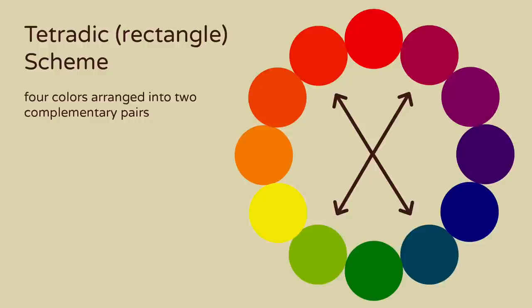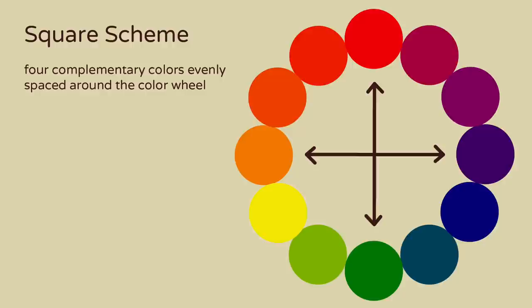A split complementary color scheme is made up of a base color and the two colors adjacent to its complementary color. A tetradic color scheme is made up of four colors arranged into two complementary pairs. And a square color scheme is made up of four complementary colors evenly spaced around the color wheel.